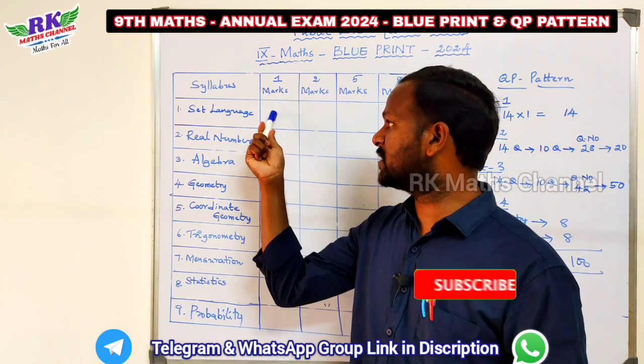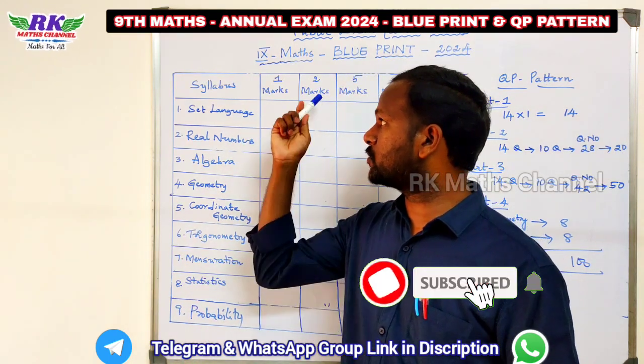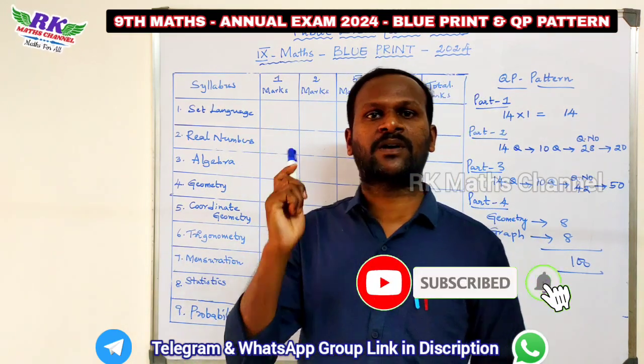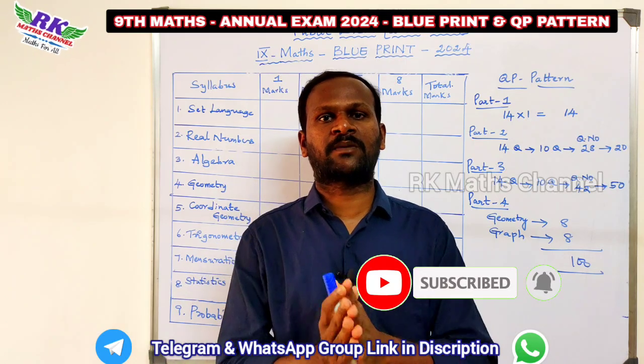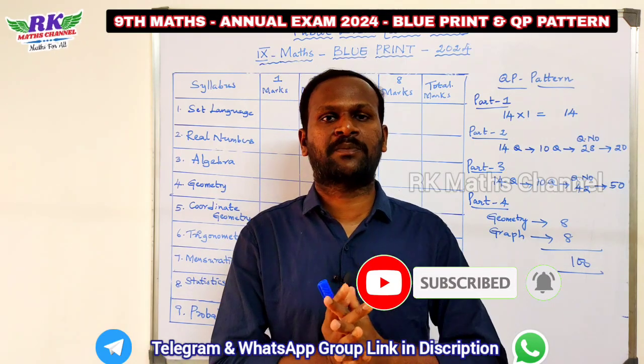So, what chapters carry 2 marks, 5 marks, and 8 marks? What chapter is in the 8th chapter? I am going to explain that.